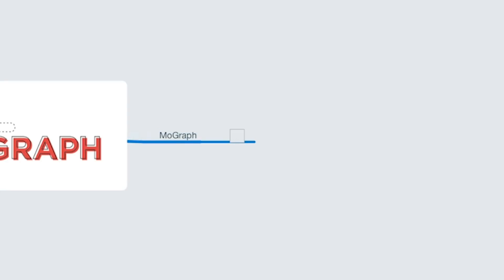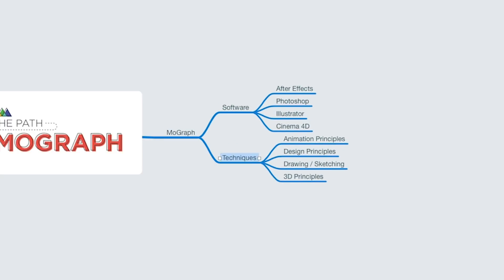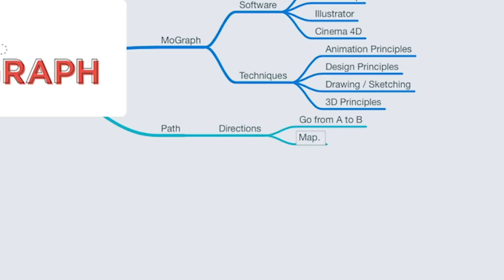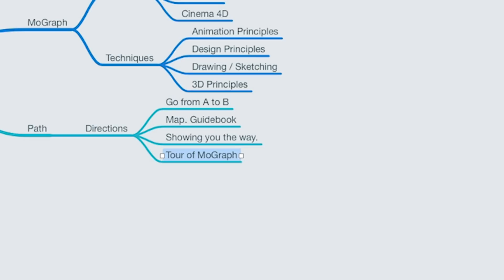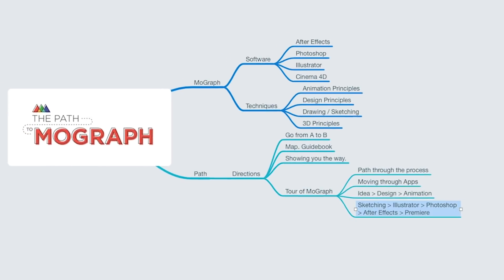You start riffing on that core idea. MoGraph makes me think of software, all the Adobe apps I use in my work. But MoGraph also makes me think of techniques like animation, design principles, drawing, 3D. I could also riff on the word path — a literal path, directions from A to B, maybe a map, maybe a tour through a motion design project. A path could also be a technical thing, like a path you draw inside Illustrator or Photoshop, with strokes and dashes that can animate and act like a trail or a map. All of these ideas connect together and trigger a visual concept.